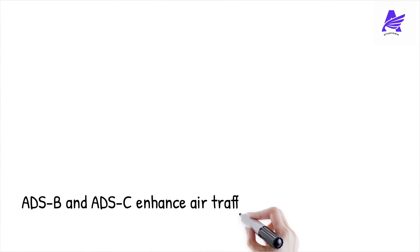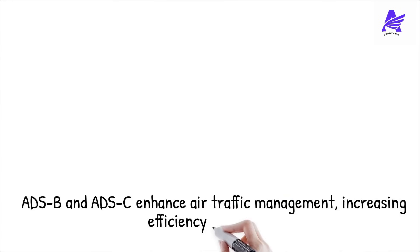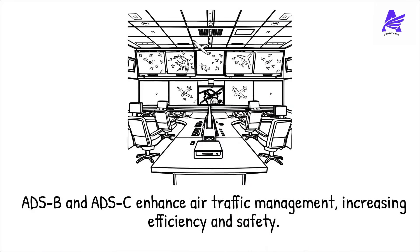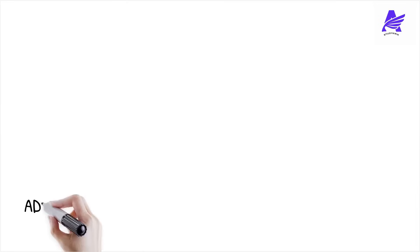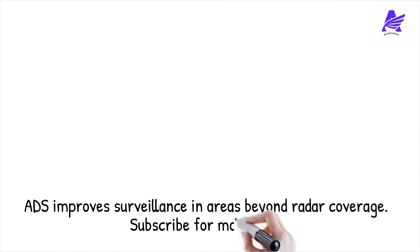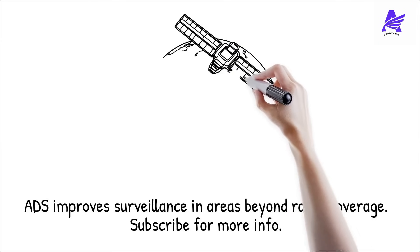Both ADS-B and ADS-C have transformed air traffic management by improving aircraft tracking and enhancing efficiency. These systems allow controllers to manage more aircraft in a given airspace while maintaining safety. By reducing reliance on radar, ADS supports the transition to a satellite-based air traffic control system. One of the biggest advantages of ADS is its ability to improve surveillance in remote and oceanic regions where radar coverage is unavailable.